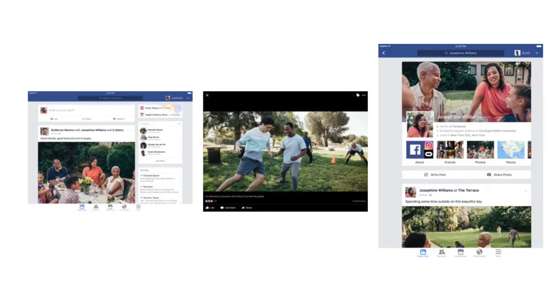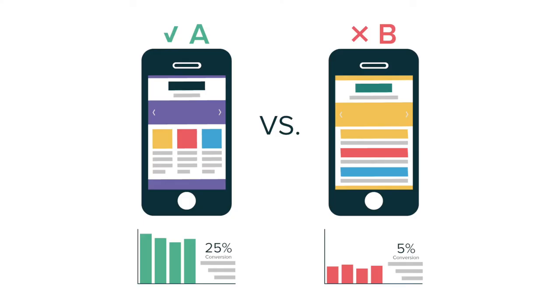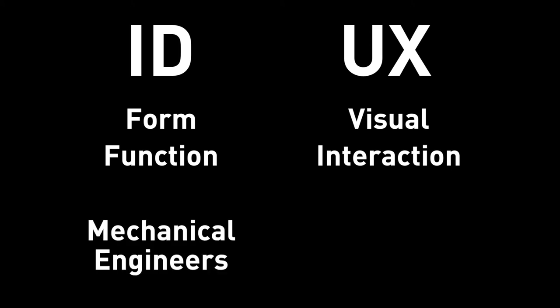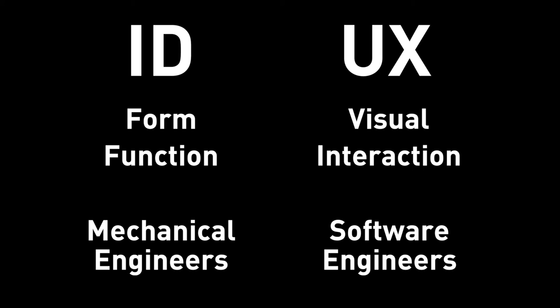A UX design product is digital — it's ubiquitous, accessible through various devices, and can exist on multiple platforms. You can access Facebook on your laptop, on your phone, on your tablet. If two users download the same app, these two apps can even be different — in Silicon Valley we call these A/B versions, where a company has two different versions to perform A/B testing to see which set of features performs better. If you juxtapose ID with UX, you'll find a lot of similarities. Form and function in ID is pretty much the same as visual design and interaction design in UX.